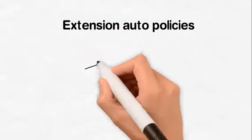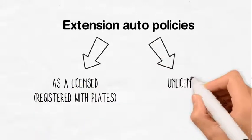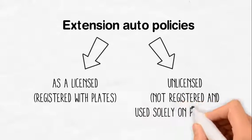Extension auto policies for snowmobiles can be purchased as licensed, registered with plates, or unlicensed, not registered, and used solely on private land.